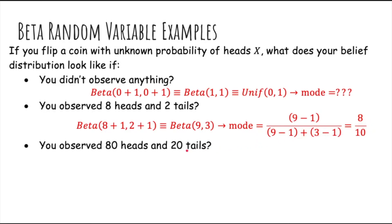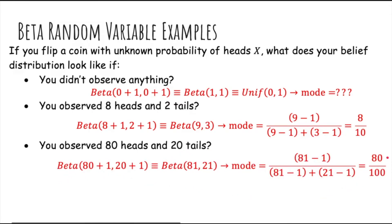And what about 80 heads and 20 tails? Again, we have beta of 80 plus 1, and then 20 plus 1, and the mode is 80 over 100.